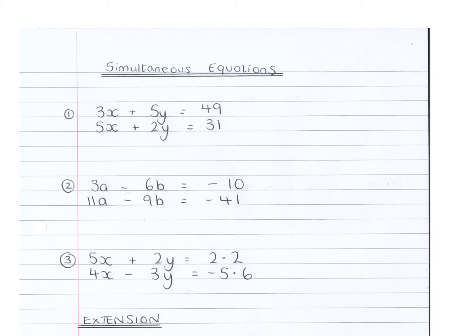Okay, for the first one I would eliminate y. So multiply the top equation by 2: 6x plus 10y equals 98. And times the bottom equation by 5: 25x plus 10y equals 155.